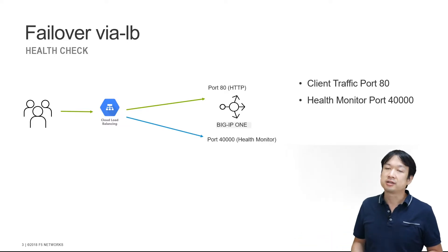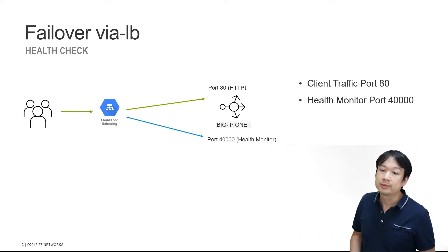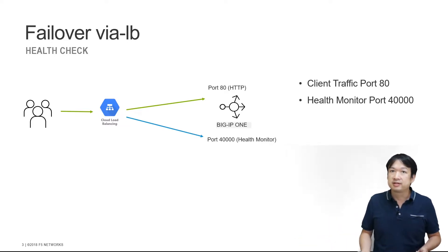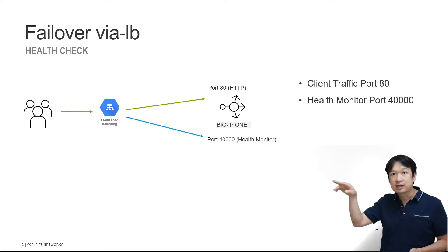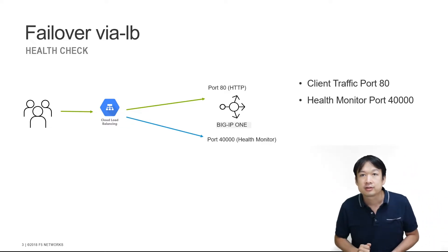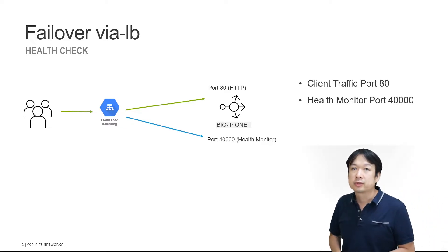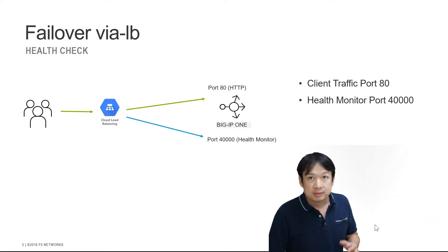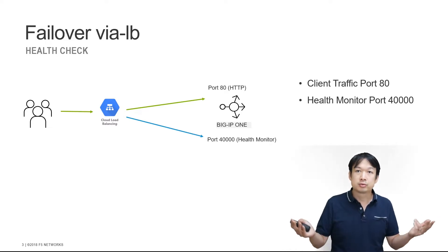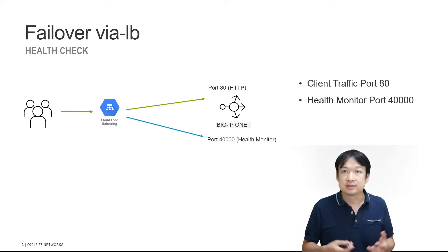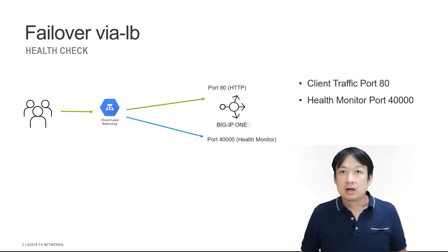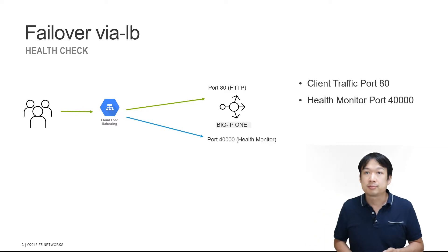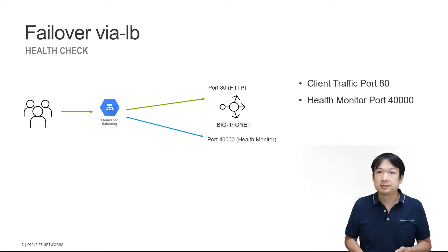So this is a case where we have load balancers load balancing load balancers — a little bit odd, but not uncommon in the public cloud environment. What you see here is we've got the data plane traffic going over to port 80, and you've got the monitor traffic going over to port 40,000. This is how our Google Deployment Manager template deploys by default.